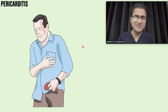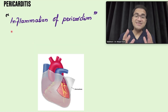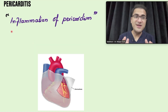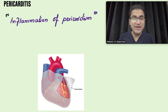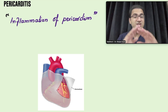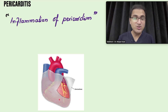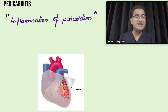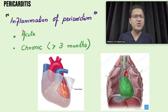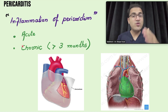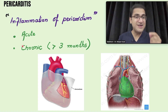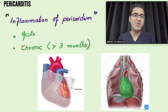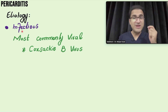What is pericarditis? Pericarditis is the inflammation of the pericardium. The pericardium is a layer of connective tissue that surrounds, covers, and protects the heart. This layer can sometimes get inflamed, resulting in pericarditis. Pericarditis can be either acute — occurring within days — or chronic, when it persists for more than three months.